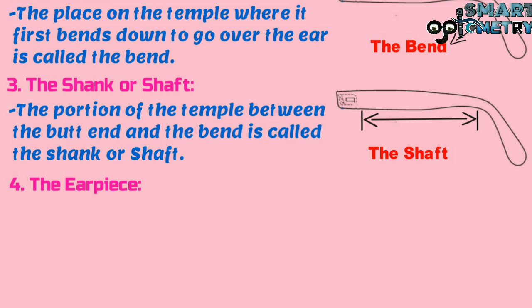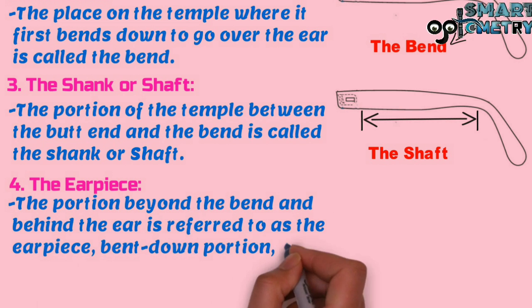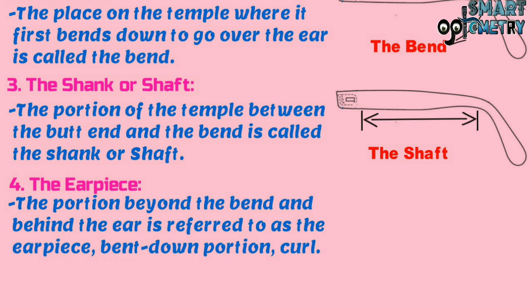Four, the earpiece. The portion beyond the bend and behind the ear is referred to as the earpiece, bend-down portion, or curl. Here in this figure you can see the earpiece.